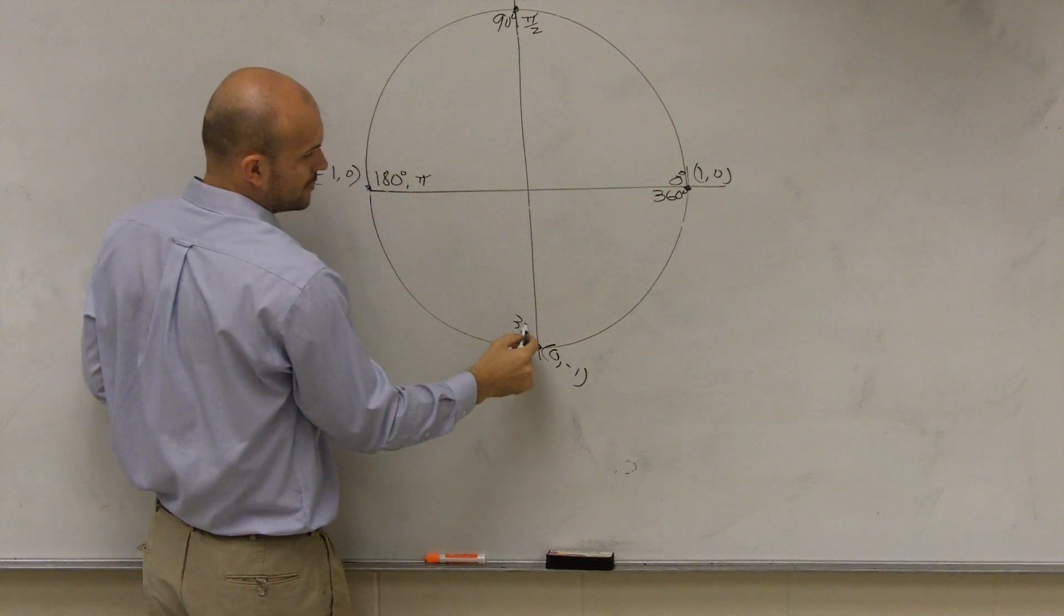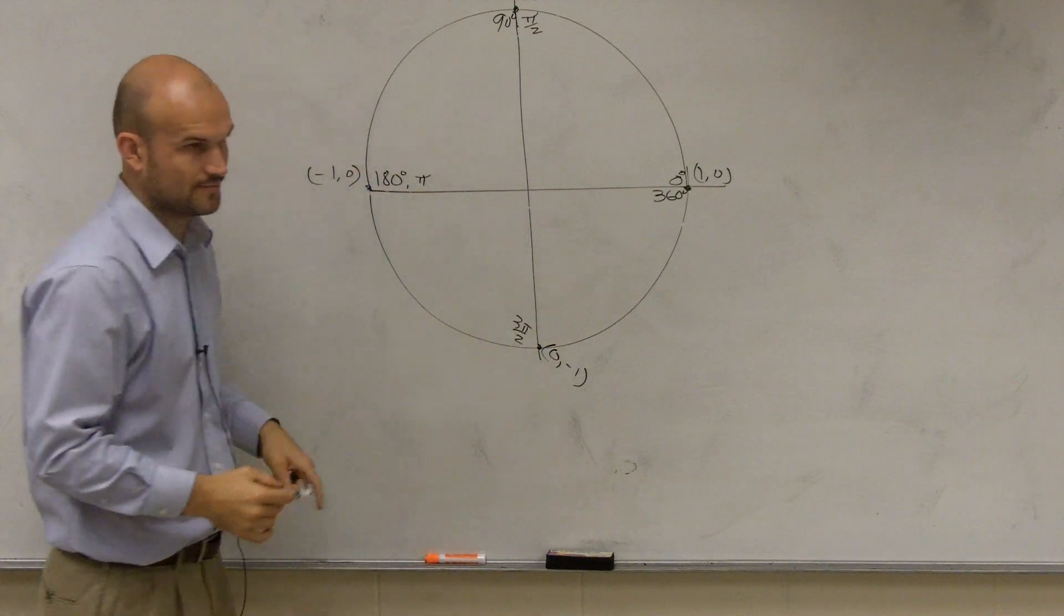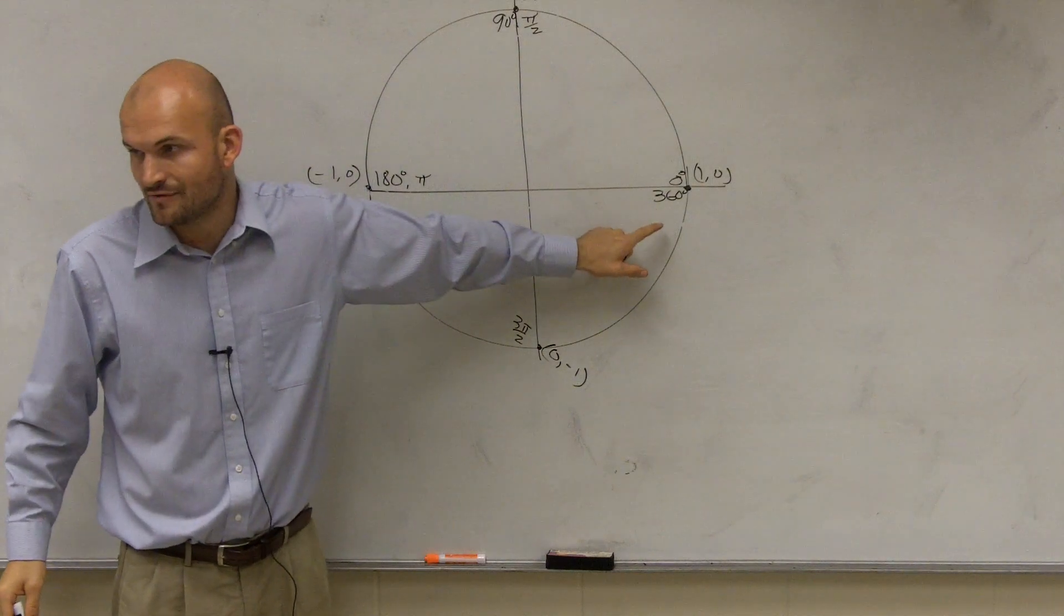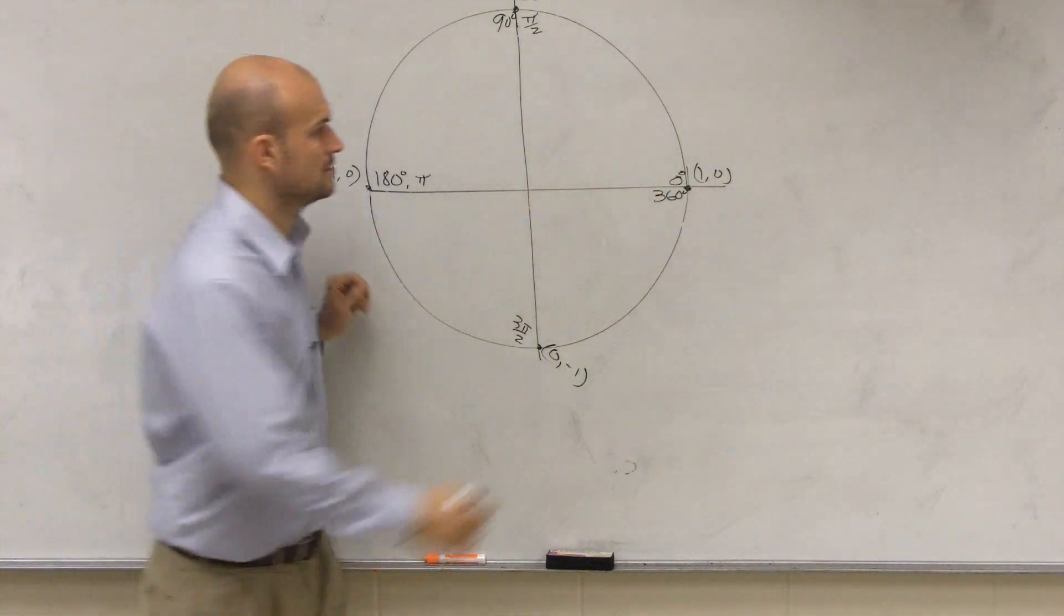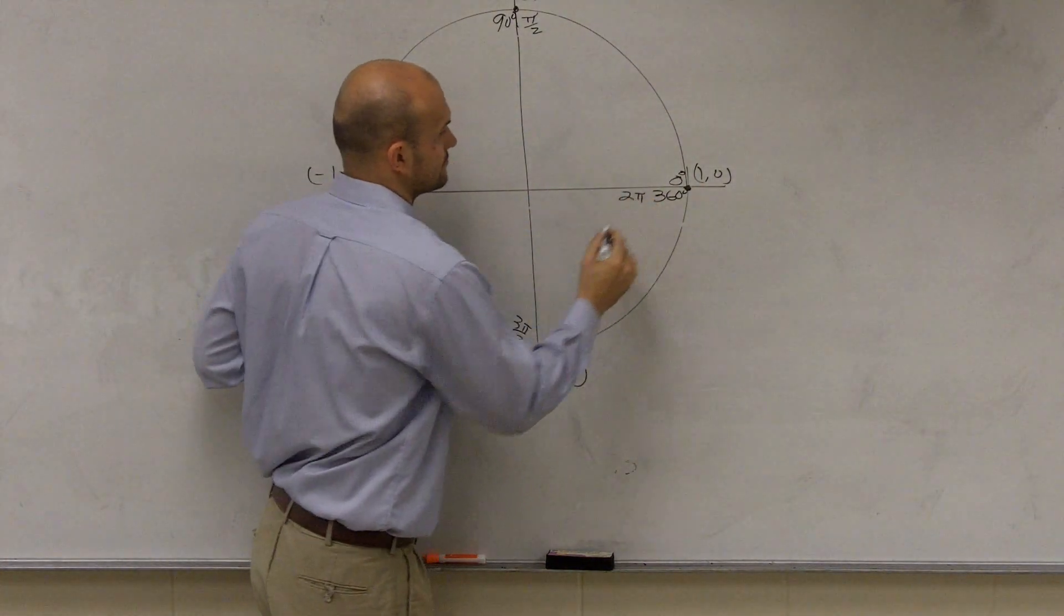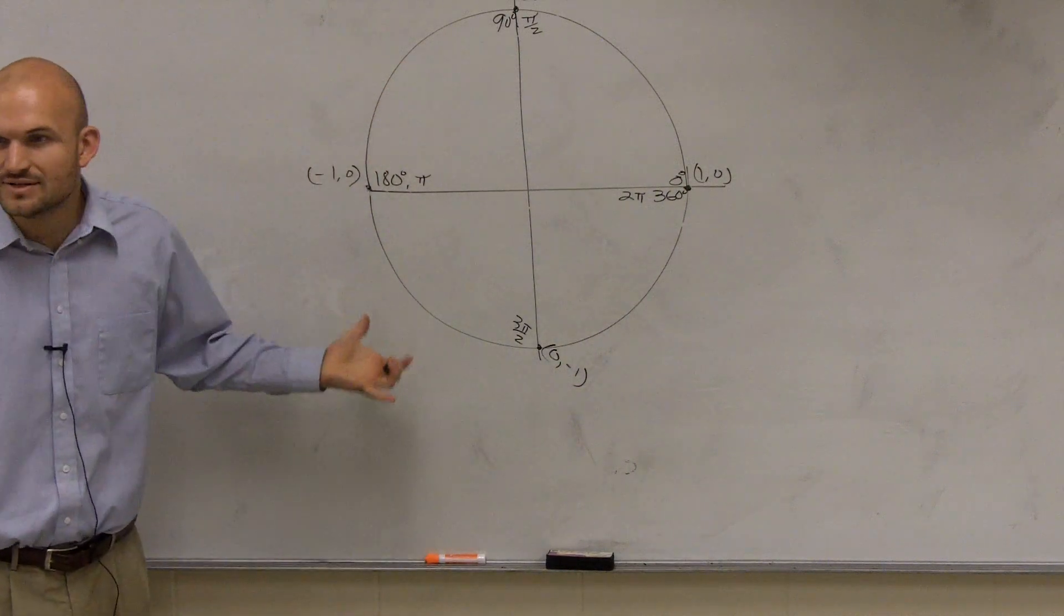If you add pi plus pi over 2, you get 3 pi over 2. Here we get 4 pi over 2, which is equal to 2 pi. Get the easy ones out of the way.